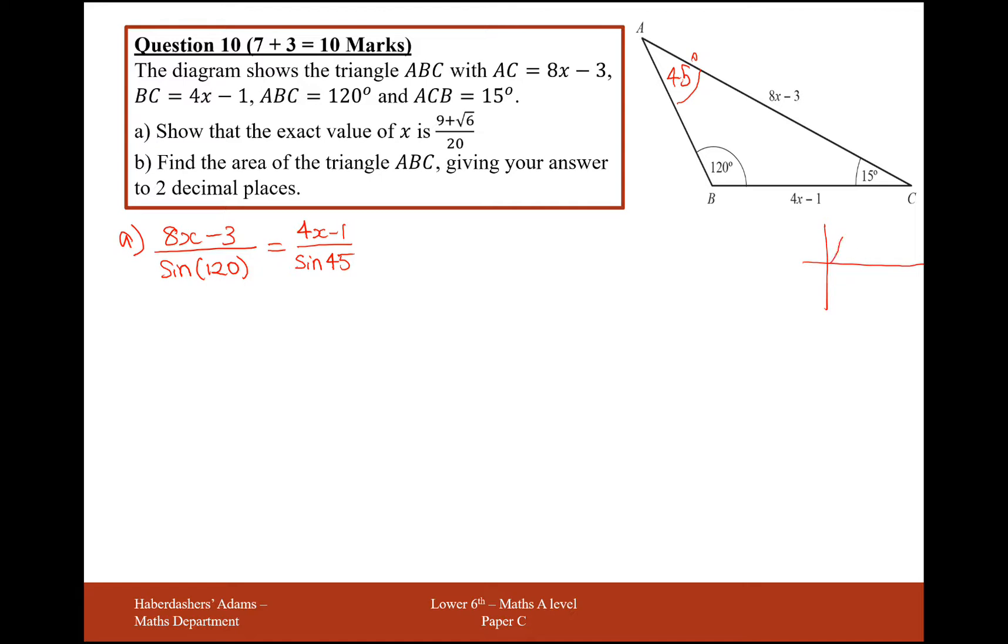I could do it on my calculator, or I could recall some of these angle facts that I've learnt earlier. So 120 degrees must match up with the 60 degree for sine. That's root 3 over 2. So following on here, 8x minus 3 over root 3 over 2 is going to equal 4x minus 1 over 1 over root 2.